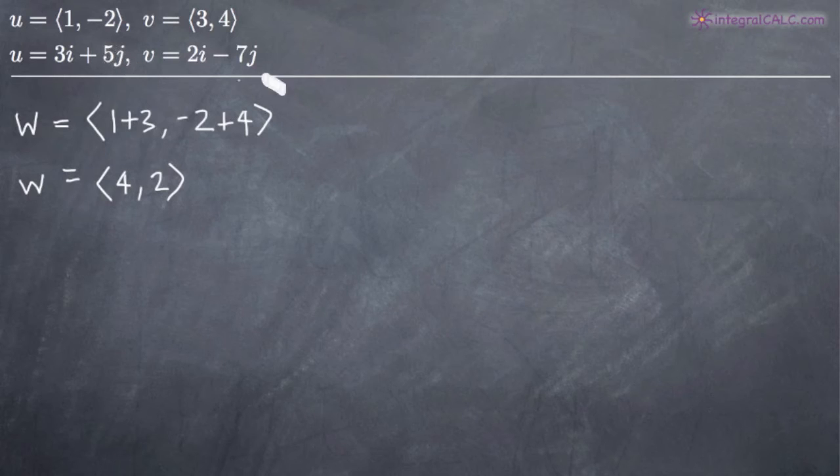And all you have to remember is that, let's take an example here, the coefficient on the i is going to be your x coordinate just like 1 is here in our vector up top. And the coefficient on the j is going to be the same as the y coordinate in a vector. So it's just basically different notation.